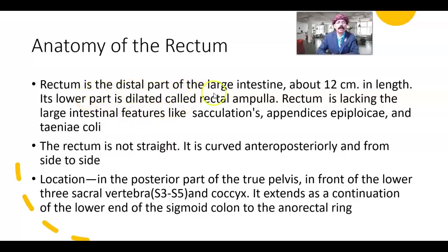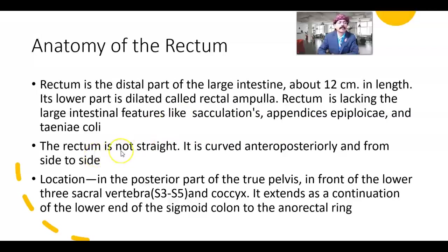Rectum is the distal part of the large intestine, about 12 cm in length. Its lower part is dilated, called the rectal ampulla. Rectum lacks the large intestinal common features like haustra, appendices epiploicae, and taeniae coli — these are not present in the rectum although it is a part of the large intestine. Rectum is not straight; its name means straight, but it is curved anteroposteriorly and from side to side.